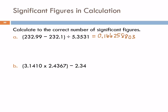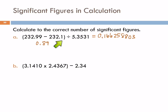Because we're doing subtracting and dividing, for significant figures purposes, we need to look at each of those operations separately. We need to look at the result of this subtraction. Going back to do that part: 232.99 minus 232.1. My calculator gives 0.89. For subtracting, we use the fewest number of decimal places. The first number has two decimal places, the second has one — so the answer has just one. I'm going to underline that first decimal place.